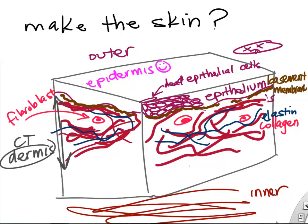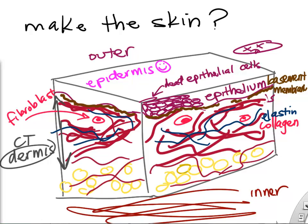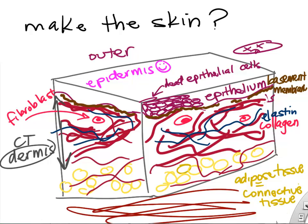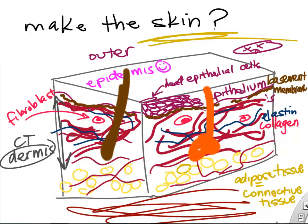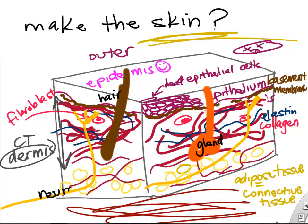We'll learn more about the skin in a separate lecture. We need to add cushion, fat, and space filler, so we draw some adipose tissue — adipocytes. That's the subcutaneous layer, sometimes called the hypodermis. Adipose tissue is really just connective tissue with fat cells. We can even draw some hairs, glands (which are epithelial tissue), and nerves in there. So the skin has epithelial tissue, connective tissue, and that's your basic skin structure.